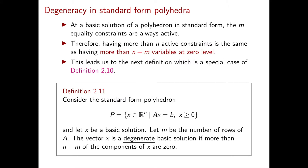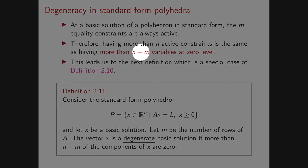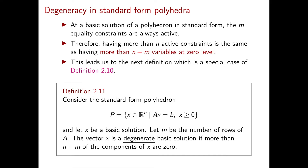Similarly to what we did for basic solutions, I want to obtain an equivalent definition of degeneracy for standard form polyhedra. In a polyhedron in standard form, all the equality constraints are active at every basic solution and we have exactly m such equality constraints. All the other constraints are non-negativity inequalities. For a basic solution to be degenerate, we need to have more than n active constraints, which means more than n minus m variables at zero.